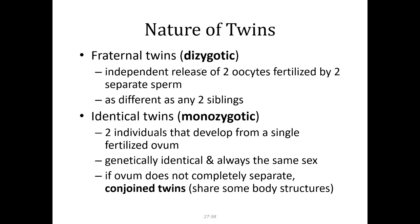If two oocytes are released — from the same or separate ovaries — and both are fertilized, those are called fraternal twins. Different eggs, different sperm, just at the same time — they would be genetically as different as any two siblings. Identical twins occur because that singular fertilized nucleus splits, so it's monozygotic. Two individuals develop from the single fertilized ovum, and they are genetically identical. If the ovum doesn't completely separate, sometimes you get conjoined twins, where some body structures may even be formed together.